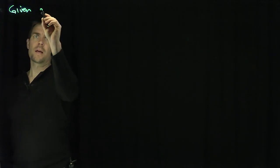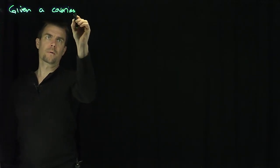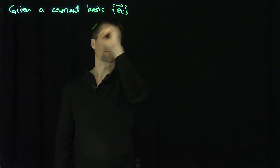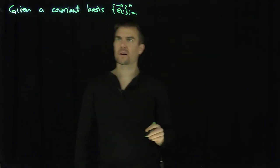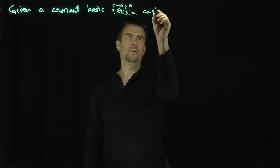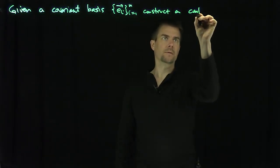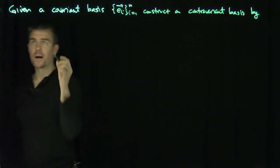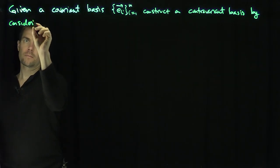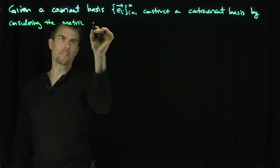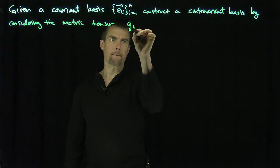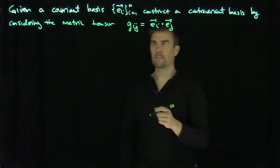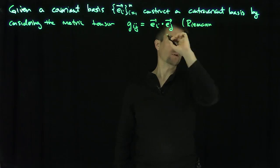If we're given a covariant basis e_i, where i goes from 1 to n — it can be an n-dimensional space — then we can construct a contravariant basis by raising the indices by considering the metric tensor. G_ij is e_i dot e_j, so I have a contravariant, two-covariant tensor — the metric tensor, also called the Riemannian tensor.